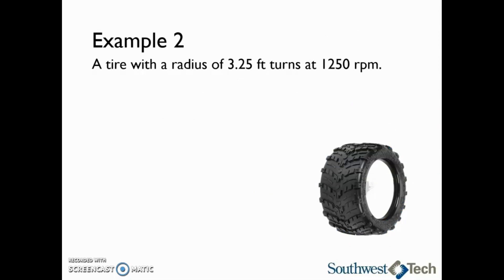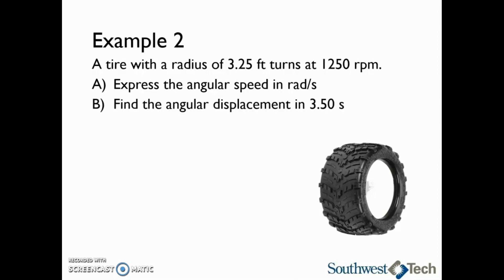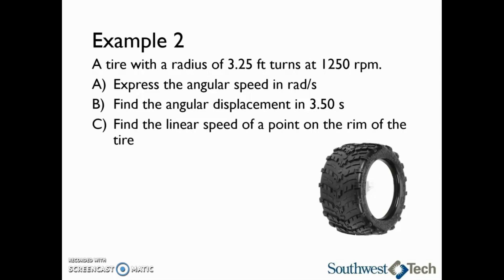Let's take a look at an angular speed and linear speed calculation. A tire with a radius of 3.25 feet turns at 1250 revolutions per minute. Express the angular speed in radians per second. Then find the angular displacement in 3.50 seconds. Last, find the linear speed of a point on the rim of the tire.